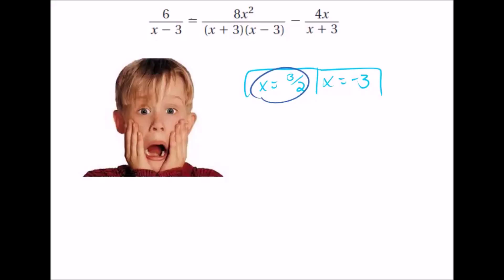So let's start with 3 halves. So 3 halves minus 3, that's not going to be 0, so that's fine. 3 halves plus 3, not going to be 0. 3 halves minus 3, not going to be 0. And 3 halves plus 3, not going to be 0. So that seems like a good answer. We're just checking to make sure it doesn't become 0.